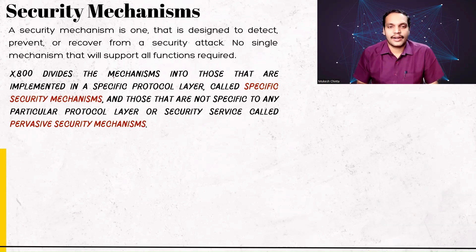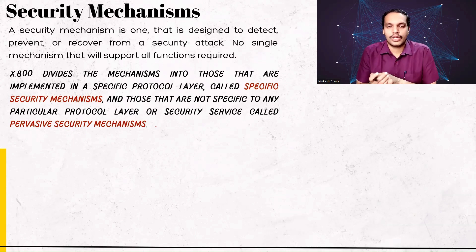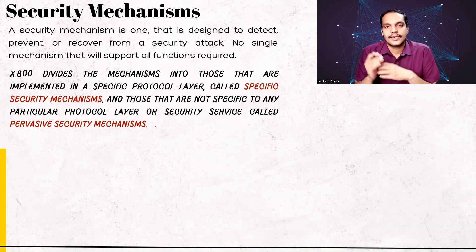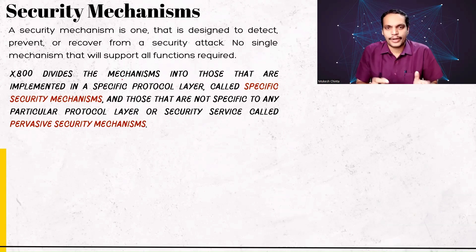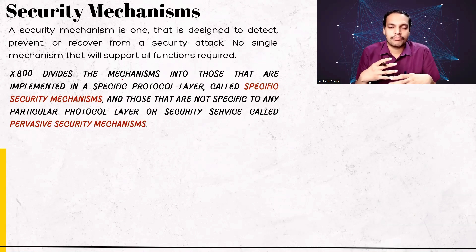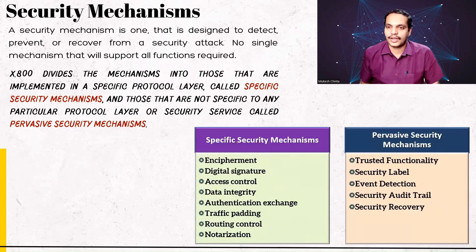No single mechanism supports all required functions. X.800 divides mechanisms into those implemented in a specific protocol layer, called specific security mechanisms, and those not specific to any particular protocol layer or security service, called pervasive security mechanisms. In general, all security mechanisms are divided into two categories: specific security mechanisms and pervasive security mechanisms. Specific security mechanisms are implemented at one protocol layer for one particular service, whereas pervasive mechanisms are common to all layers.